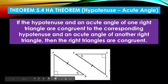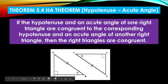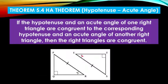As you can see, our hypotenuse has a mark of congruence. Same with the other corresponding hypotenuse. This means they are congruent to each other. Next, on our acute angle there's a mark of congruence. Same with the corresponding acute angle. That's why it's called hypotenuse acute angle theorem.